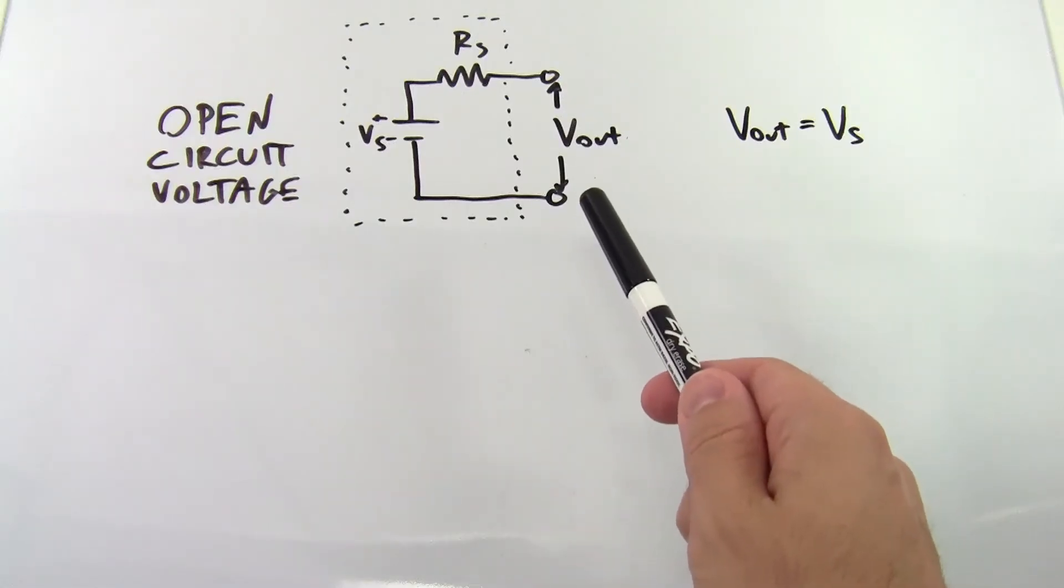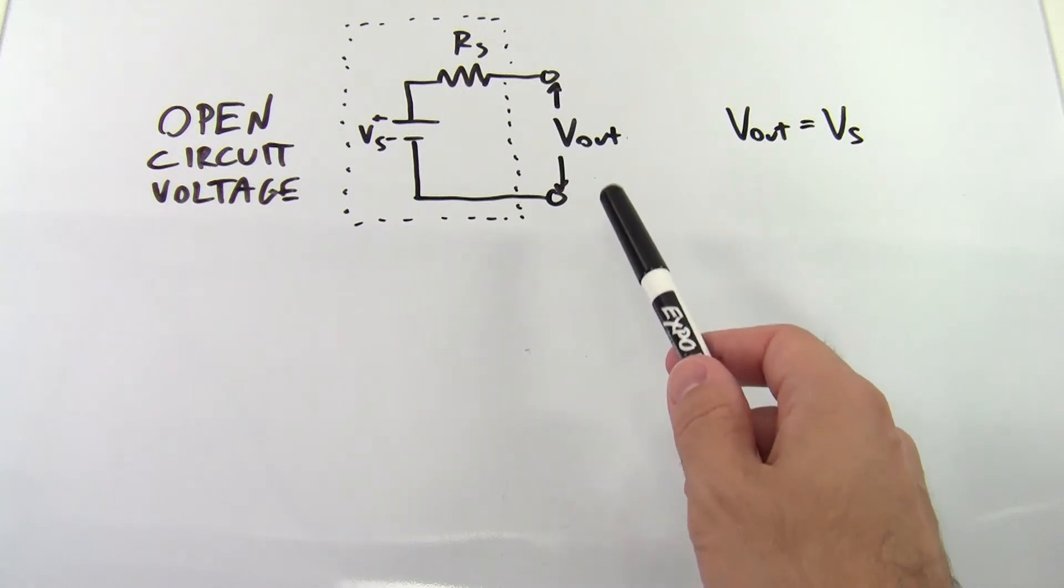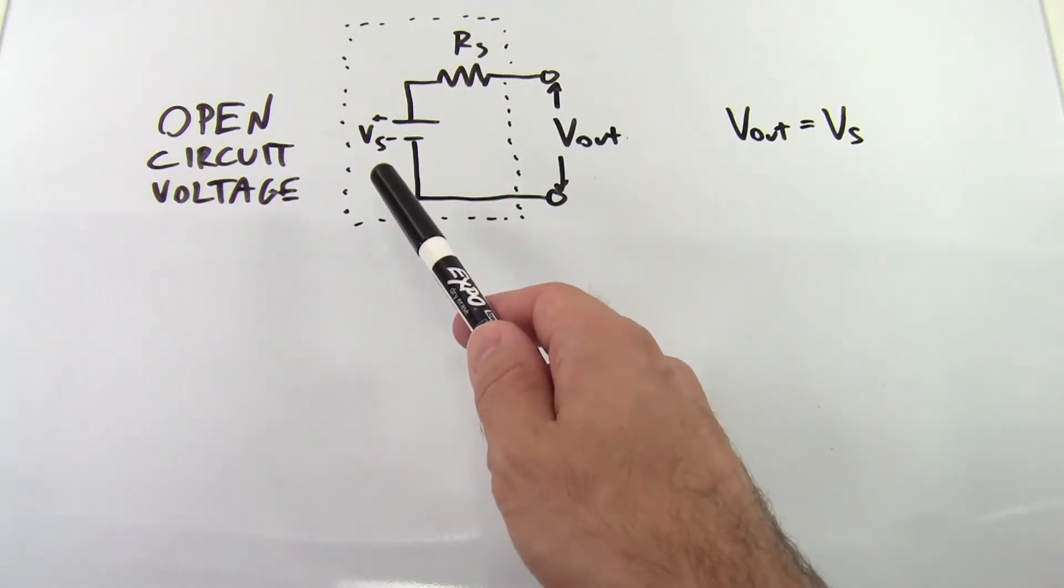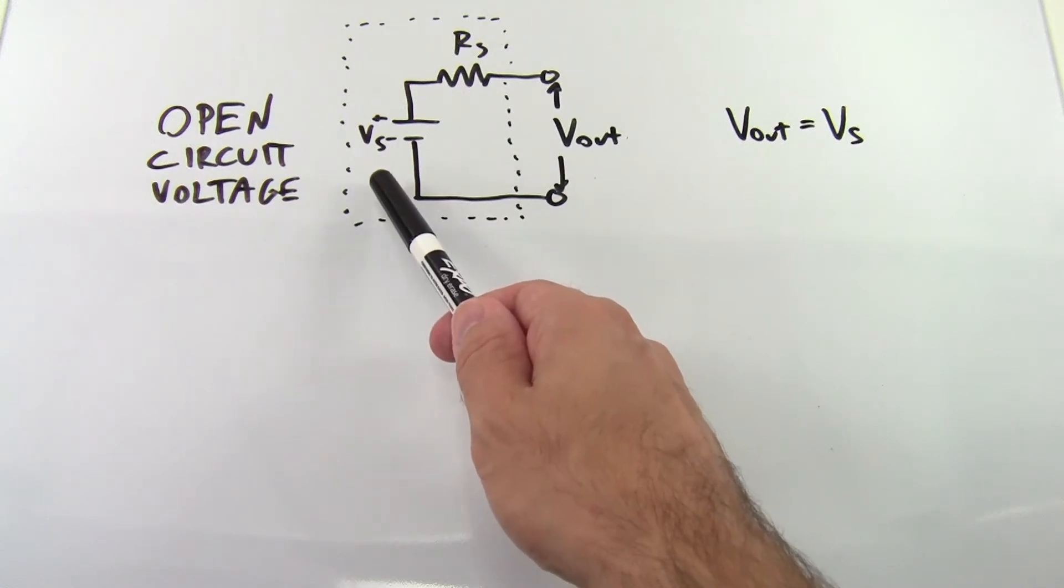Now, if instead of short-circuiting the battery terminals, you leave them open or unconnected so you have an open circuit, then if you have a battery with a rated open circuit voltage VS, the output voltage that you measure at the terminals will be equal to VS.